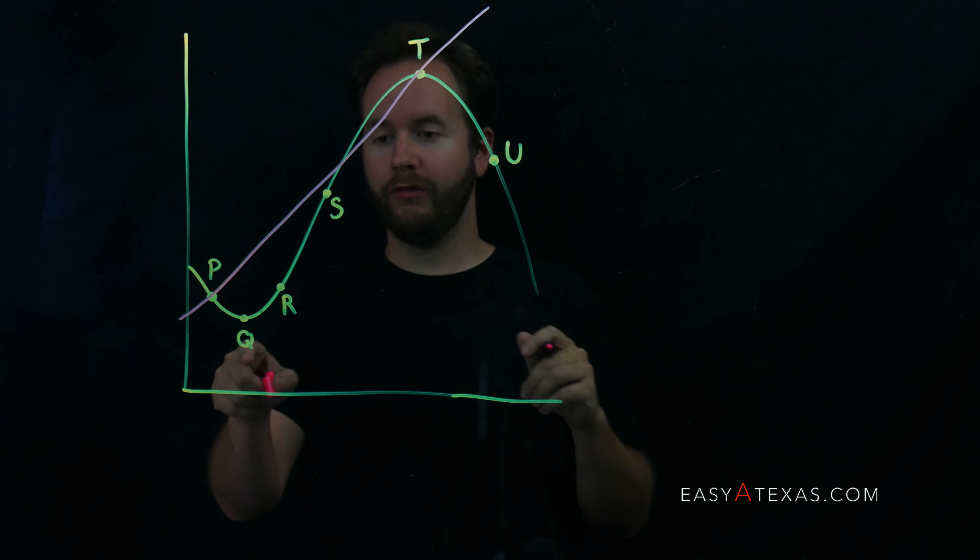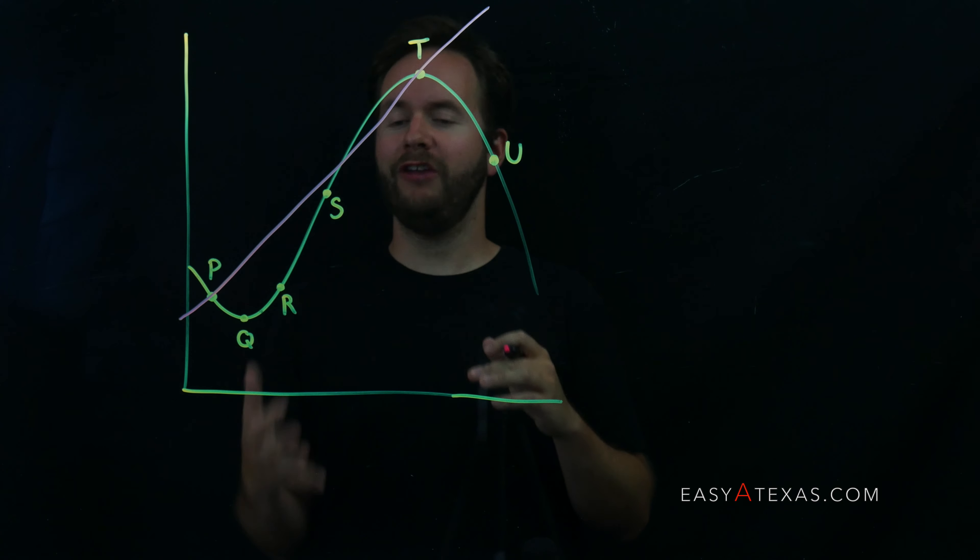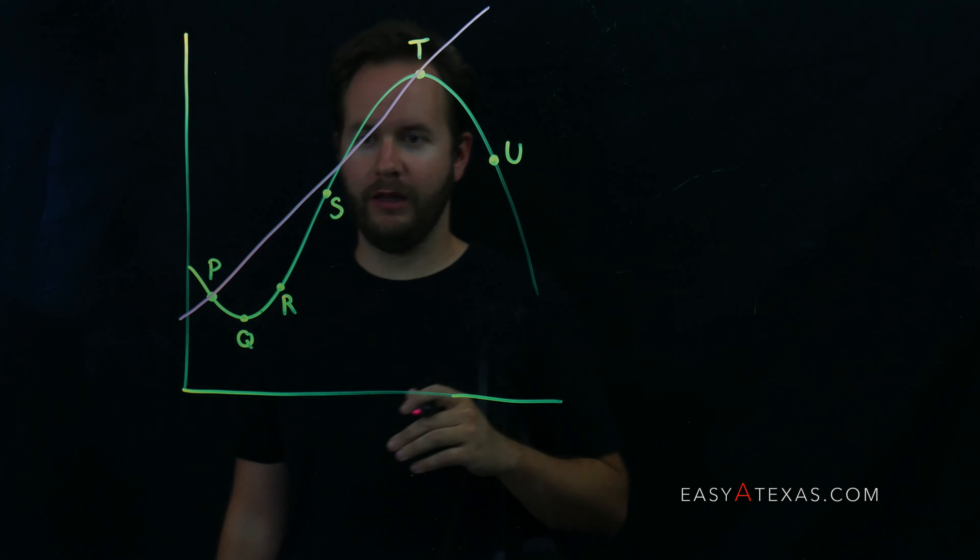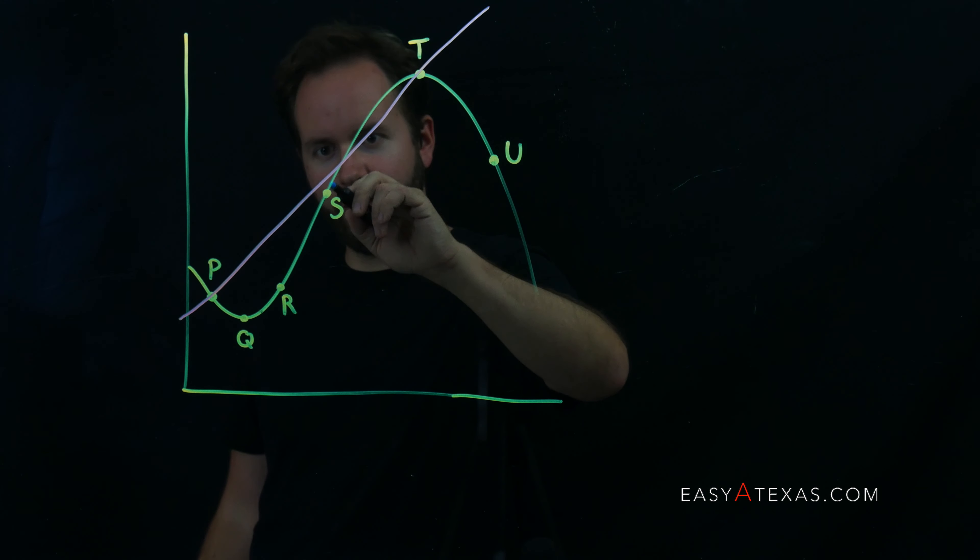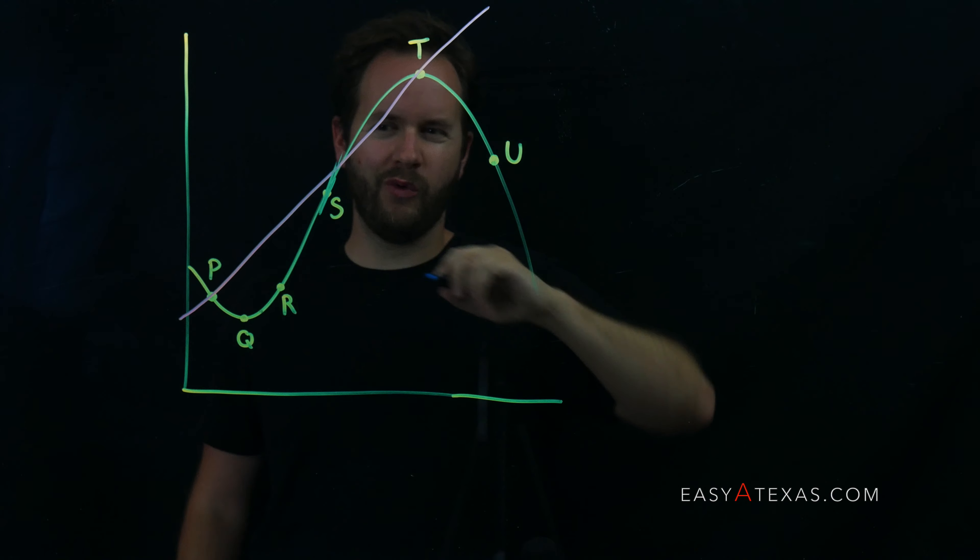and now we have to ask ourselves which of the remaining points has a tangent line where the tangent line is parallel. Let's go ahead and examine point S first. Point S, if we draw a tangent line, isn't quite parallel.